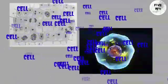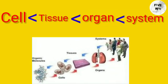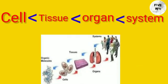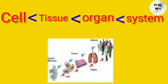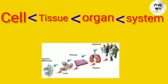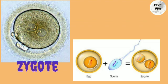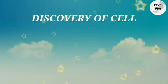Cells are the body's smallest structural and functional unit. Cells are grouped together to form tissue; different tissues are grouped to form organs; and organs are grouped together to form systems, each performing related functions that maintain homeostasis. The human body develops from a single cell called the zygote, which results from the fusion of ovum and spermatozoa.